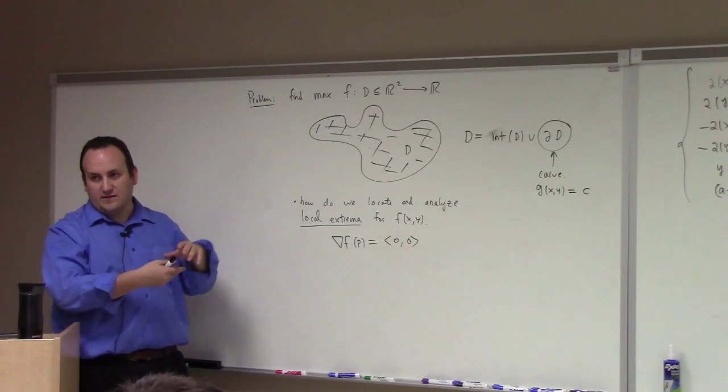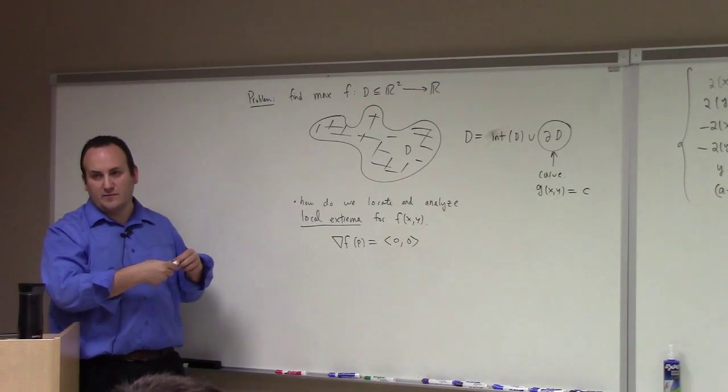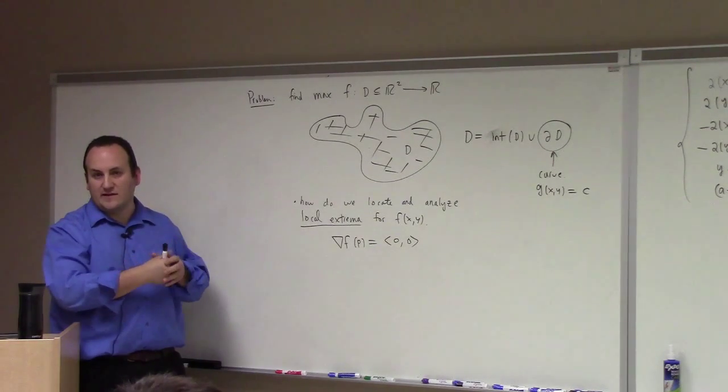And you pick the largest and smallest, and that solves the absolute maximum problem for a compact domain in n dimensions.